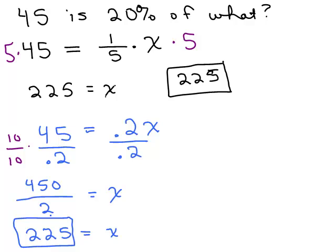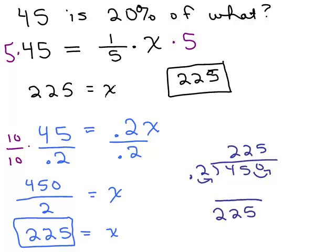You get the same answer if you just do 45 divided by 0.2 in your calculator, or if you do a little long division, 0.2 into 45, move the decimal over 1, and if you divide 2 into 450, you're still going to get 225. So you have options. But no matter how you look at it, 45 is 20% of 225.